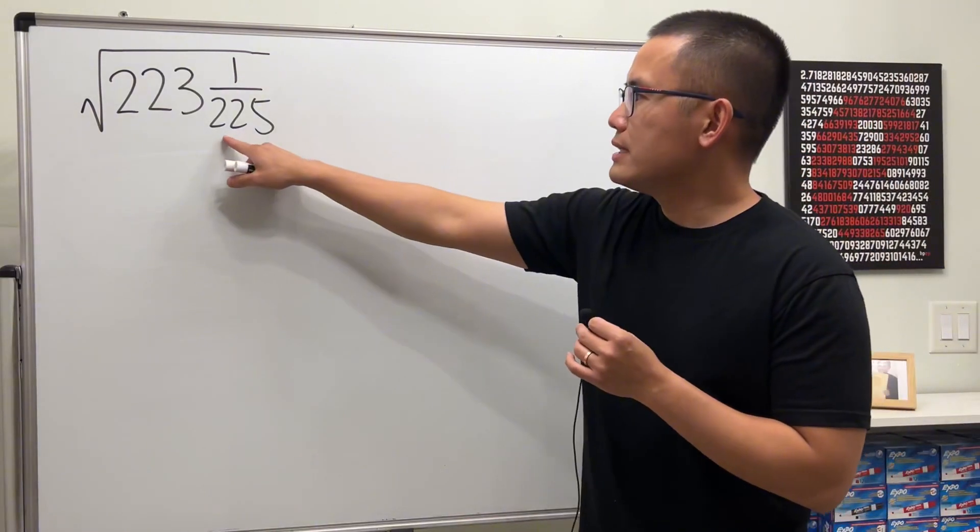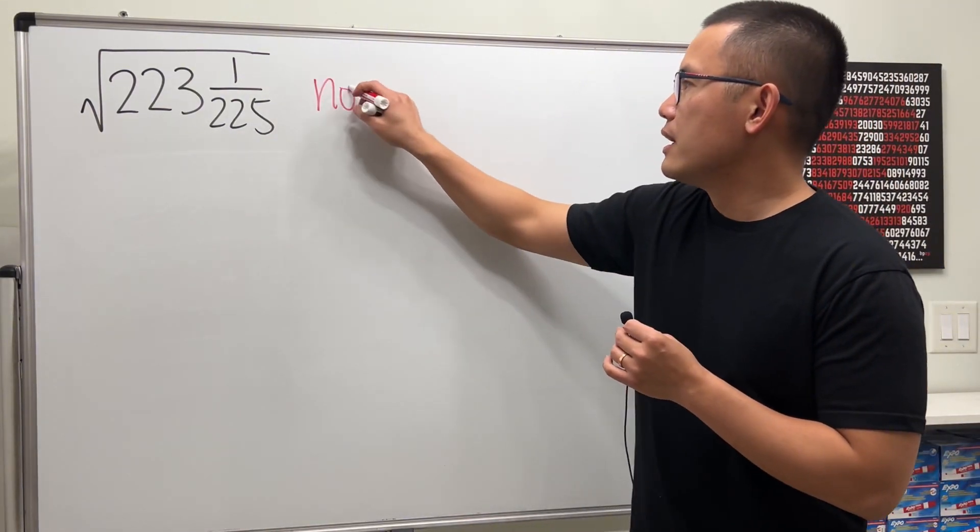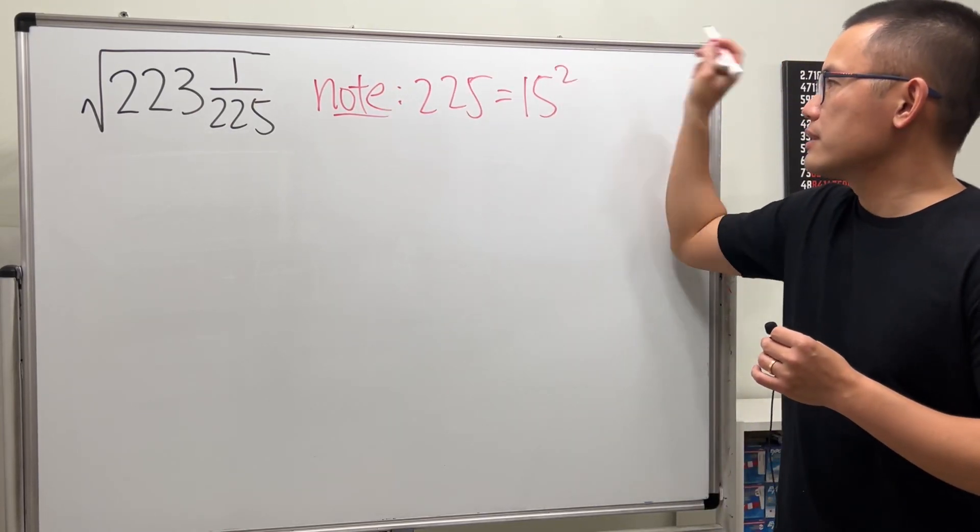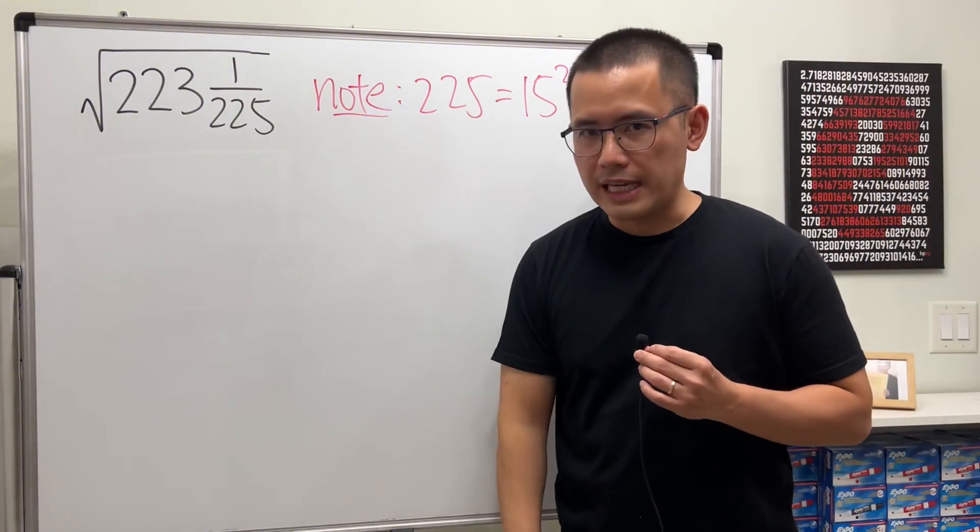Firstly, notice that we have 225. And that is a perfect square, which is nice. That's 15 squared.